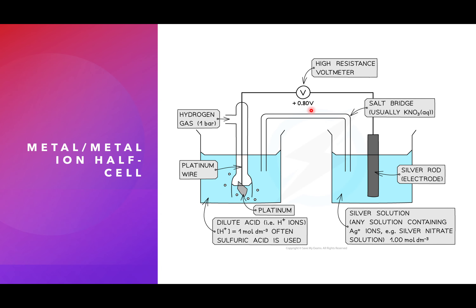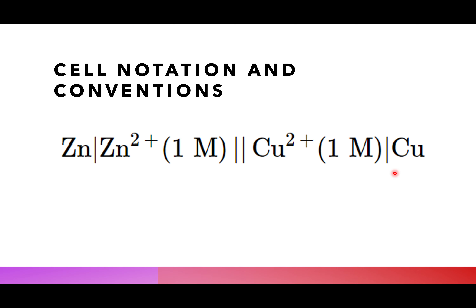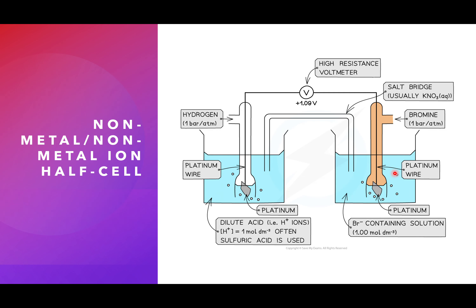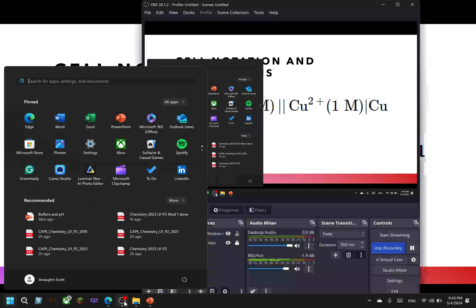You can use the platinum electrode for species that are not solids — if it's not a metal, you can use the platinum electrode. We also need to know how to do cell notation diagrams, so hopefully we know how to do this.